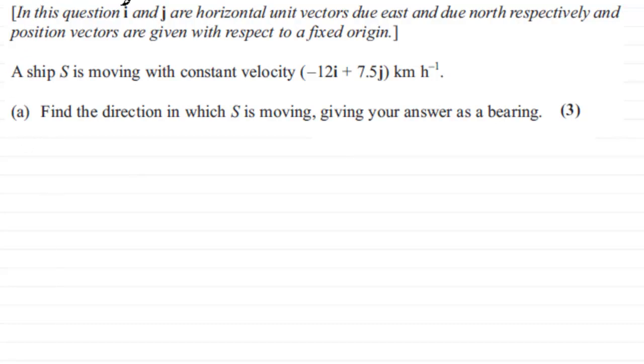In this question I and J are horizontal unit vectors due east and due north respectively, and position vectors are given with respect to a fixed origin. A ship S is moving with constant velocity -12i + 7.5j kilometers per hour, and we've got to find the direction in which S is moving, giving your answer as a bearing.